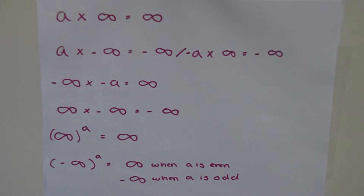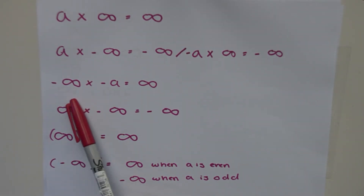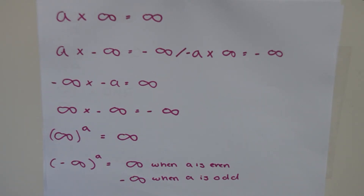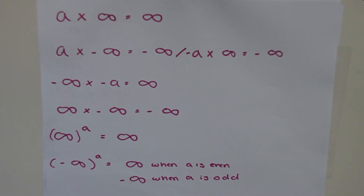Our next case is when negative infinity is multiplied by a negative finite number. In this case the negatives cancel out and we're left with positive infinity. For example, negative 4 times negative 3 equals 12 — a positive result. In the same way, negative infinity times a negative finite number leaves us with positive infinity.